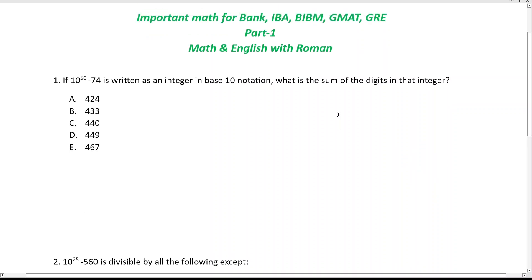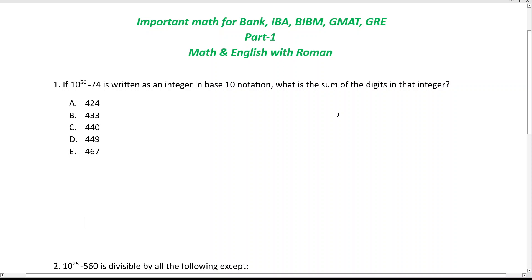First of all, first method: if 10 to the power minus 74 is written as an integer in base 10 notation, what is the sum of digits of the integer? When you look at this problem, it seems quite tough and interesting. Actually, this is a secondary math ability strategy department problem — you can solve it within five seconds. So let me show you how to approach it.